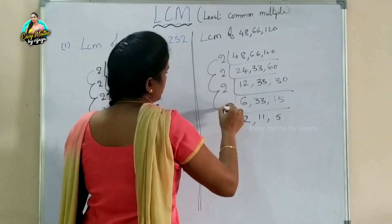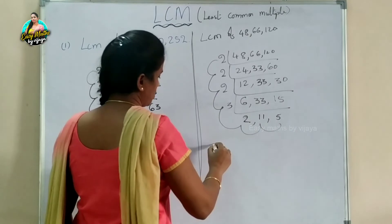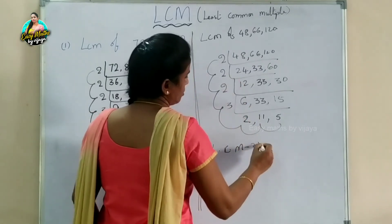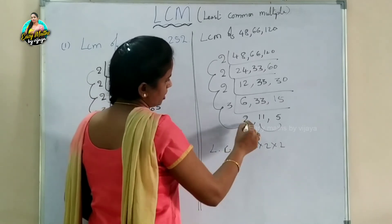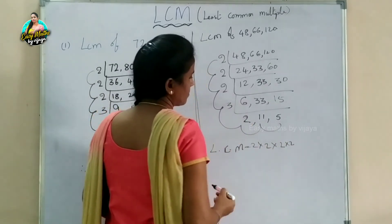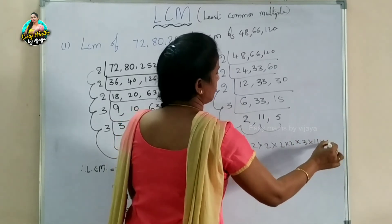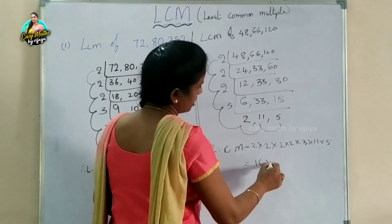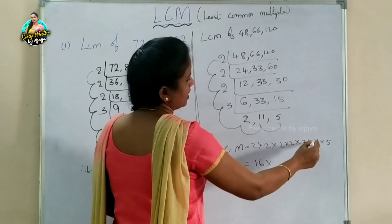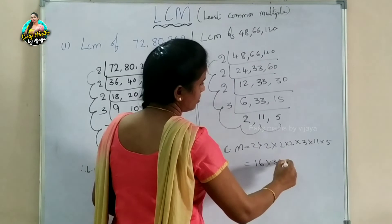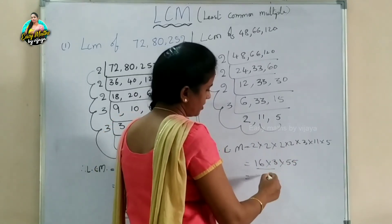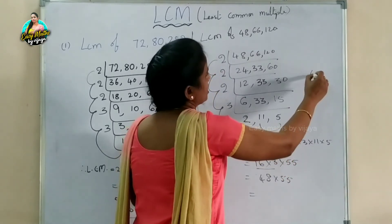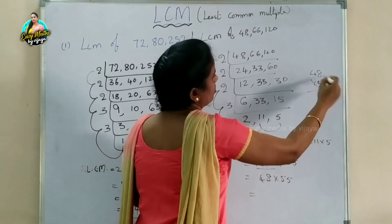Now we multiply the LCM: 2 times 2 times 2 times 2 equals 16. Then 16 times 3 equals 48. 48 times 11 equals 528. Finally, 528 times 5 equals 2640.